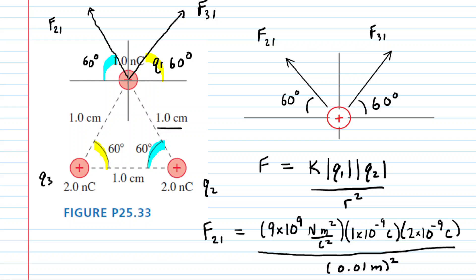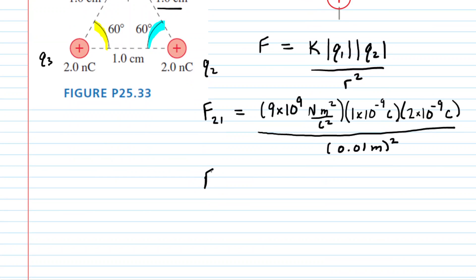When you do that, you will get a magnitude of force between charges two and one equal to 1.8 times 10 to the minus four. Dimensionally, this is going to be in newtons.